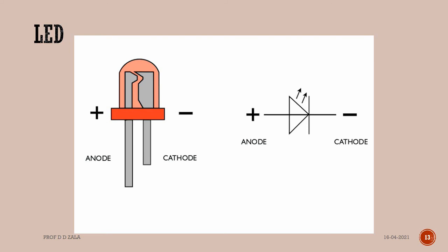The longer lead is the anode; it should be connected to the positive voltage. The shorter lead is the cathode; it should be connected to the ground.